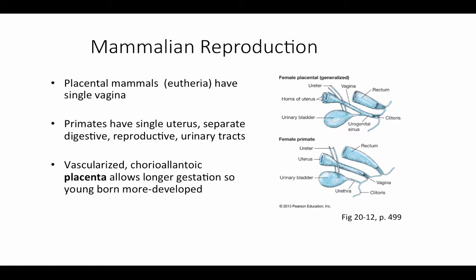Now let's take a look at reproduction in the eutherian or placental mammals. The big change here is the further development of the placenta — the structure that allows nutrients, oxygen, and waste materials to be exchanged between the mother and the growing embryo. Placental mammals have only a single vagina; the double vagina was a derived feature in the marsupials. In primates, there is just a single uterus, and they also completely separate the reproductive and urinary tracts, with a separate opening for the urethra, the birth canal, and the rectum.